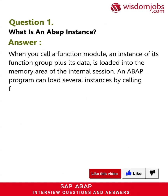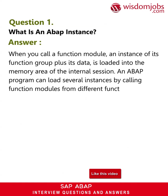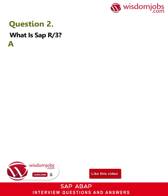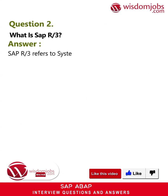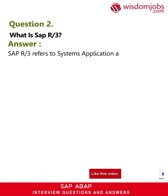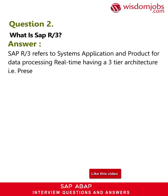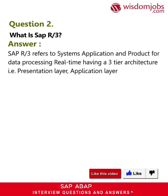Question 2: What is SAP R/3? Answer: SAP R/3 refers to Systems, Applications, and Products for Data Processing — Real-Time — having a 3-tier architecture, i.e., presentation layer, application layer, and database layer.